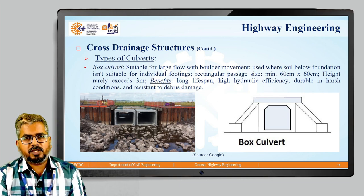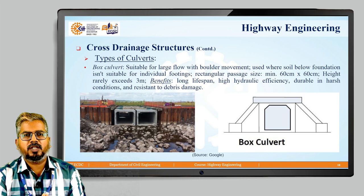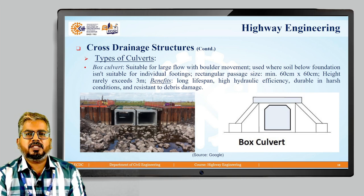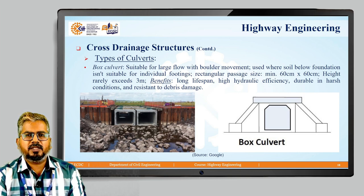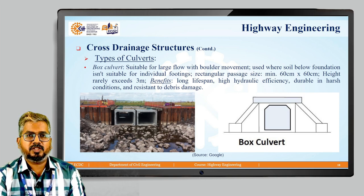The box culvert, also shown in the figure, is usually suitable for large flow with boulder movements — as can be seen in the figure where large boulders and rocks are present. These are used where the soil below the foundation is not suitable for individual footings. The rectangular passage size should be a minimum of 60 cm by 60 cm, and the height rarely exceeds 3 meters. Benefits include long life span, high hydraulic efficiency, durability in harsh conditions, and good resistance towards debris damage.